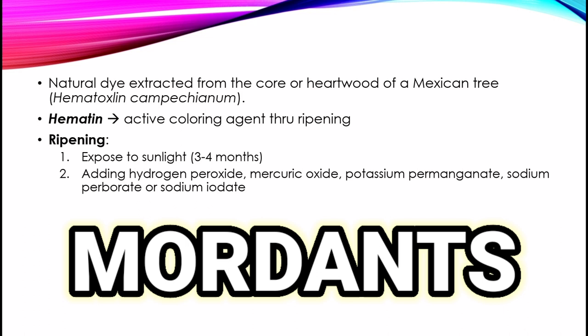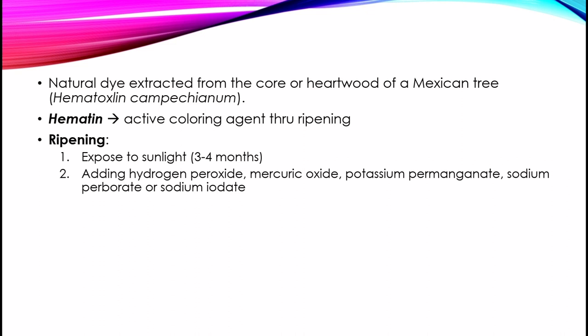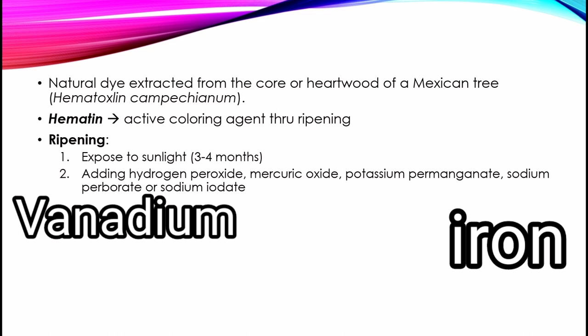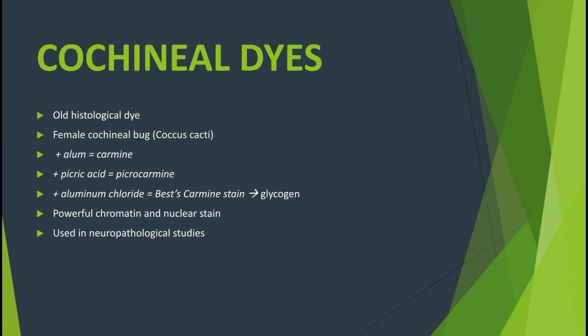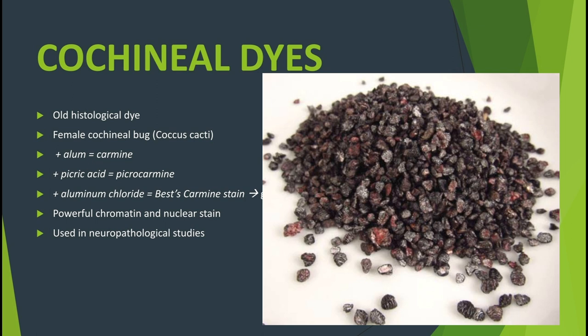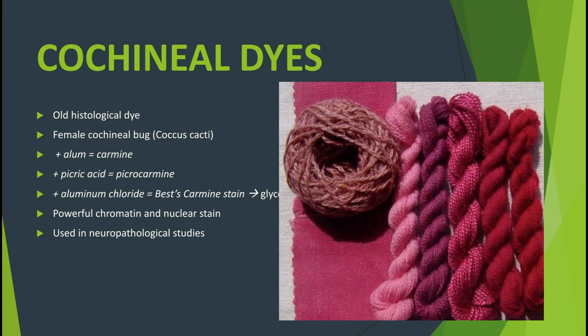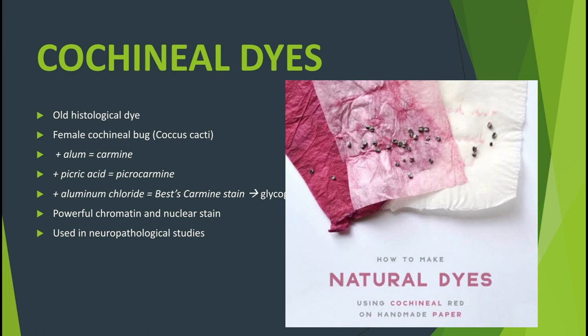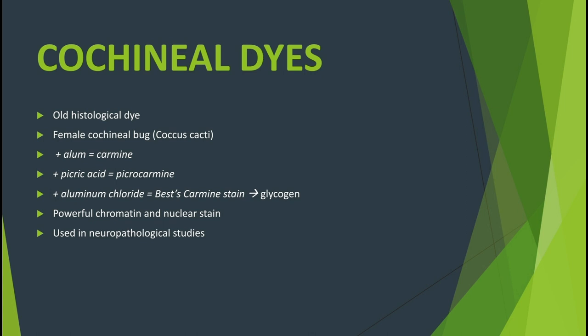Some examples of mordants include vanadium; iron can be both an oxidizing agent and a mordant, while alum is a mordant. Next, we have cochineal dyes. This is considered to be an old histologic dye extracted from the female cochineal bug, Coccus cacti. When cochineal dyes are treated with alum, they can produce the dye carmine, which is widely used as a powerful chromatin and nuclear stain for fresh material and smear preparations. When combined with picric acid, it is called picro-carmine, which is extensively used in neuropathological studies. When combined with aluminum chloride, the stain is called BEST's carmine stain, which is used for the demonstration of glycogen.